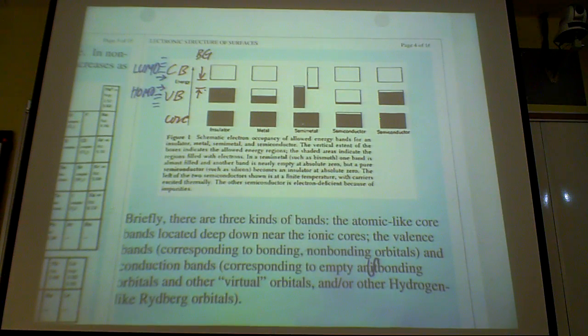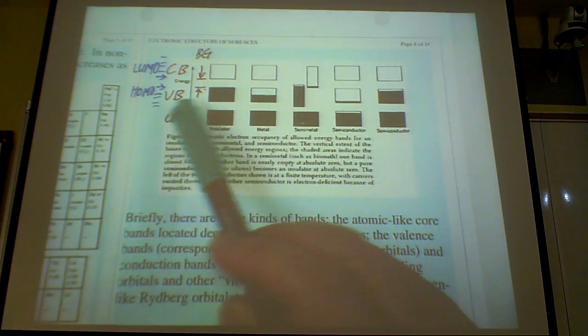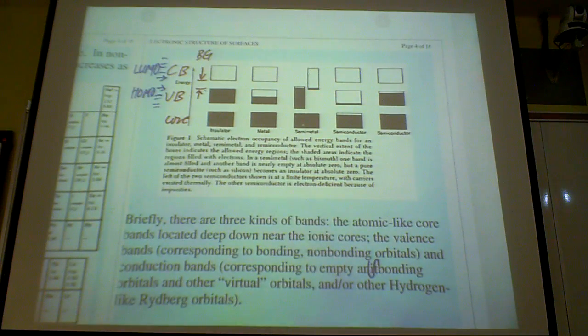You have the core orbital, C-O-R-E, core orbital. And the core orbitals are isolated, localized at the atomic center, and they don't really interact with their neighbors.